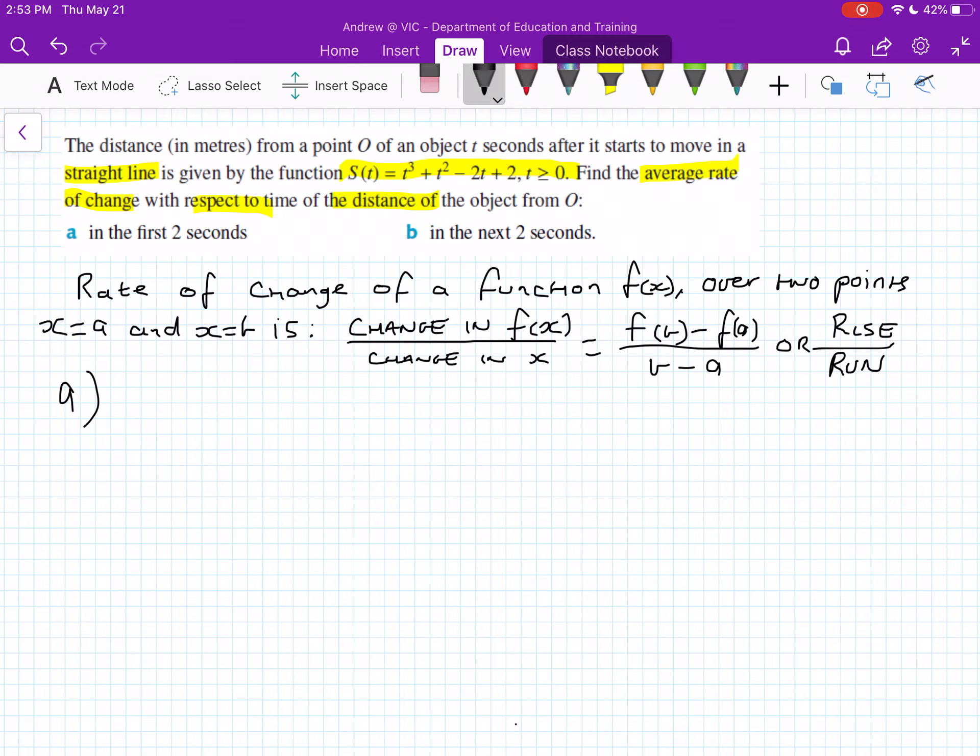So we're looking at the average rate of change with respect to time of the distance from the object from O in the first two seconds. So let's figure out our a and b value. So first, our a, it starts at zero seconds. So we've got essentially, and I'm going to write t for this because this is our t value. We've got t equals zero and then in the first two seconds we're going to be looking when t equals two as well.